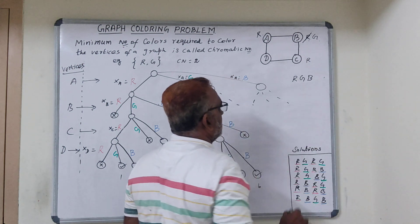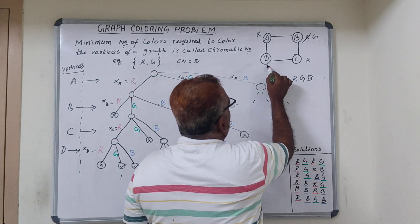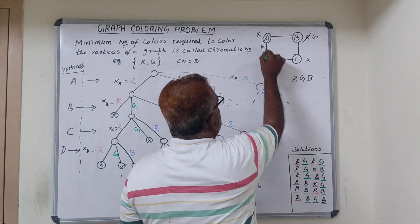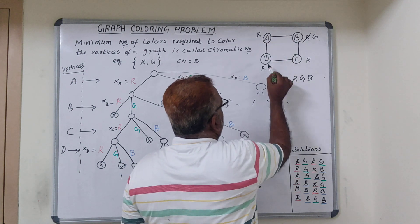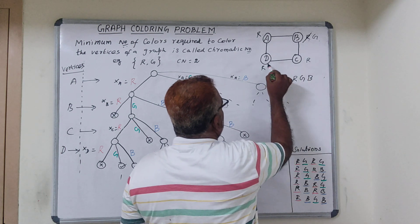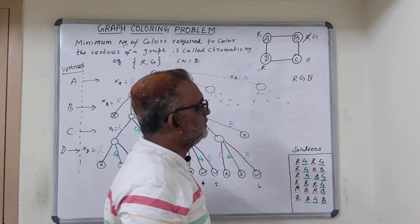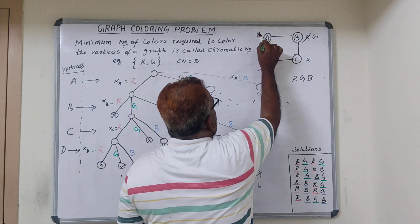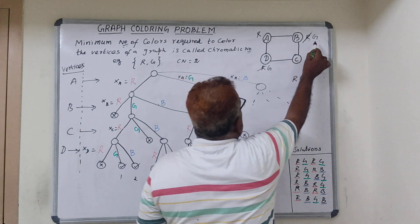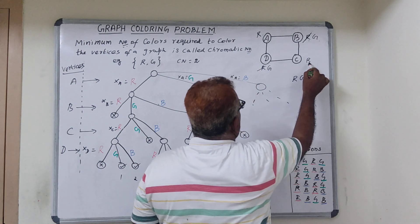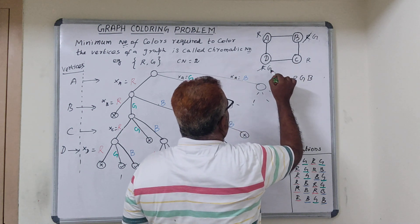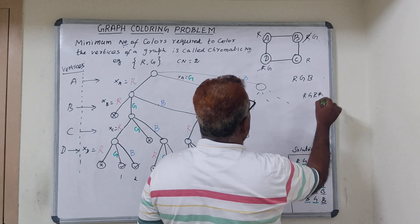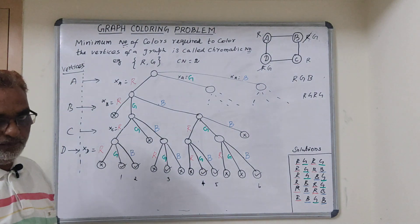Now C must be different from green. If I select red for C, then D must be different from red. D cannot be red because A is red and C is also red. So let us select green for D. Now A is red, B is green, C is red, D is green — the constraint is satisfied. This is one particular solution for the coloring problem.